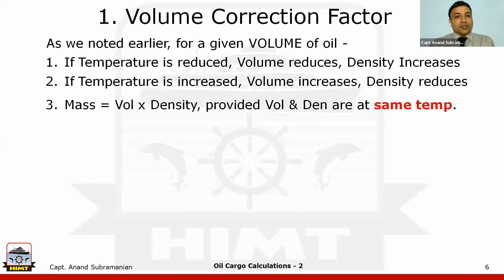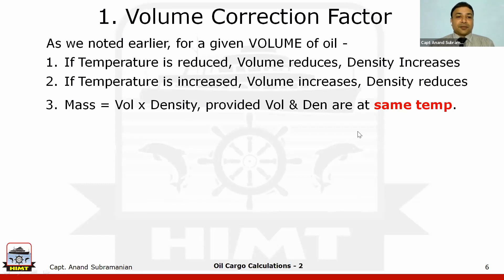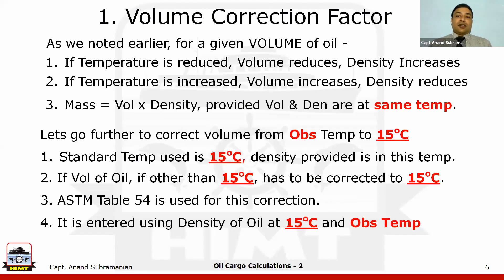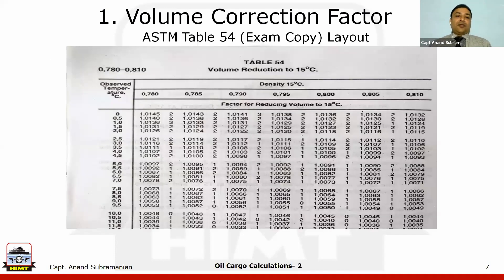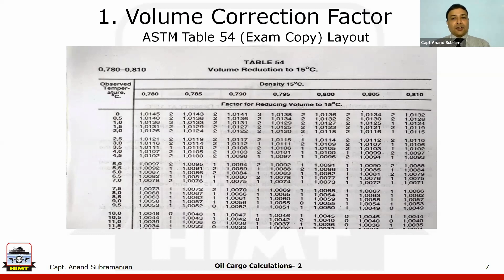Once we get the volume of the oil, if the temperature is reduced, the volume reduces and the density increases. The formula we use is: mass = volume × density, provided both volume and density are at the same temperature. The standard temperature used for all our calculations is 15 degrees Celsius, and we have various ASTM tables connecting observed temperature and volume to 15 degrees Celsius.